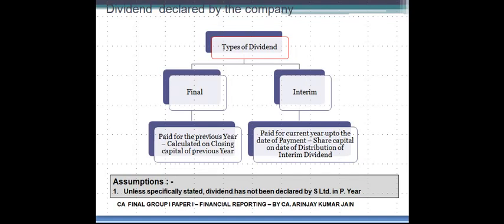Let's understand a little more about the dividends declared by the subsidiary company. I'm talking about subsidiary only — for the parent it's simple, just like any normal dividend declared by any company. When a subsidiary company declares a dividend, it can declare two kinds: one is the final dividend and the other one is the interim.